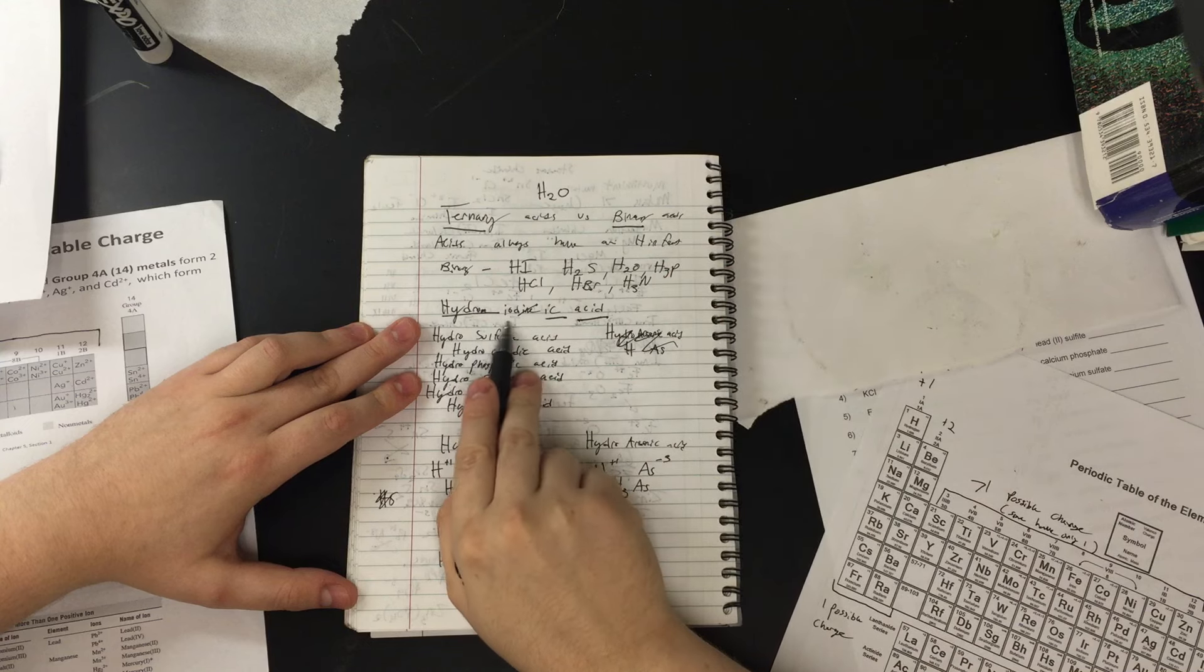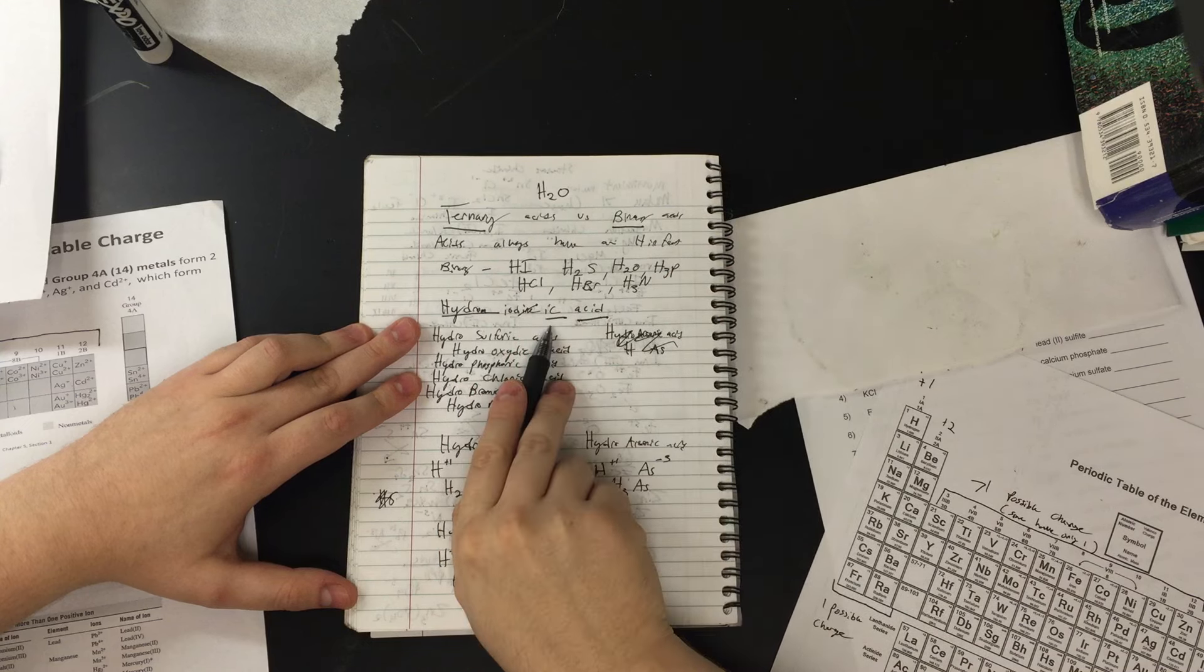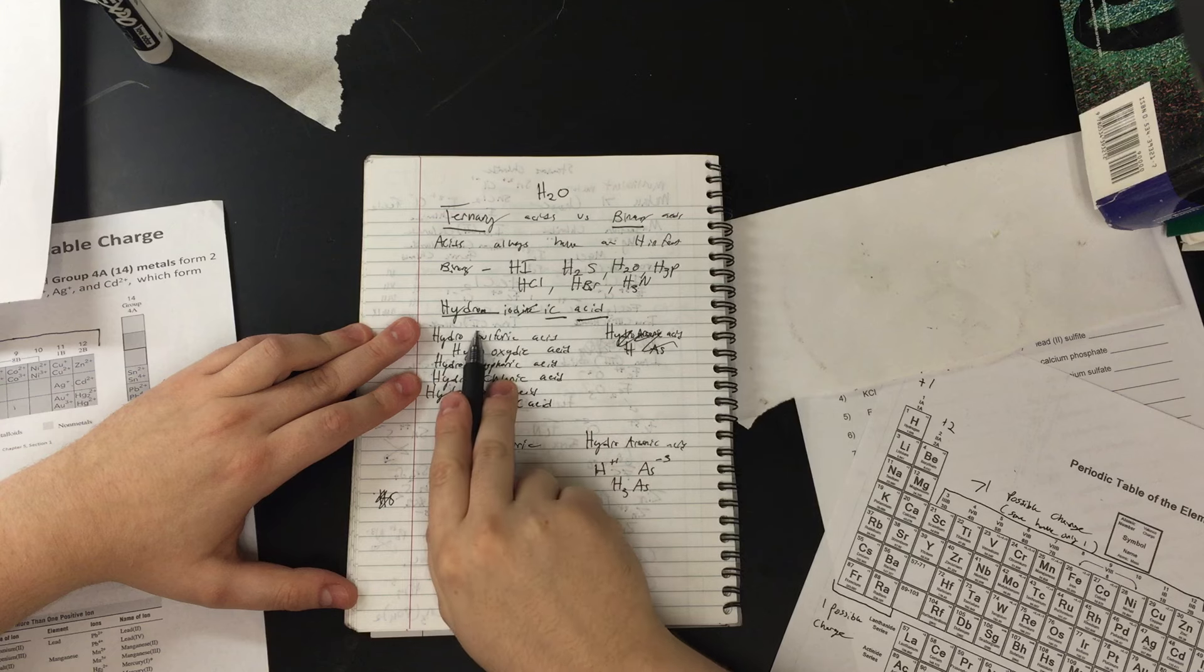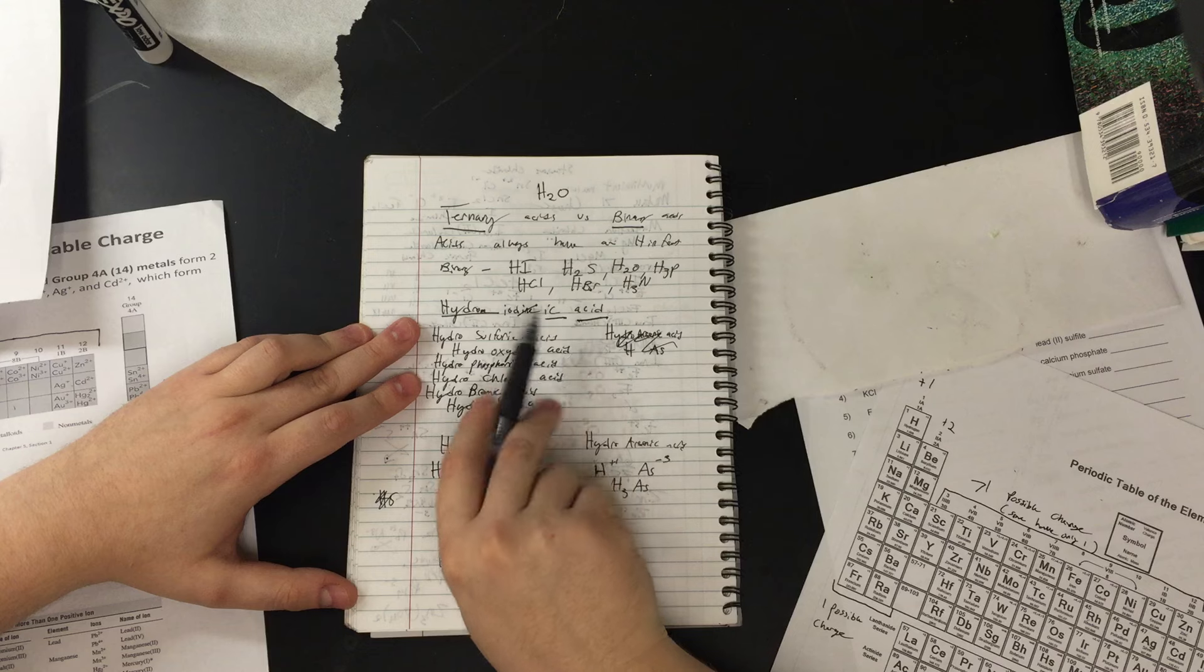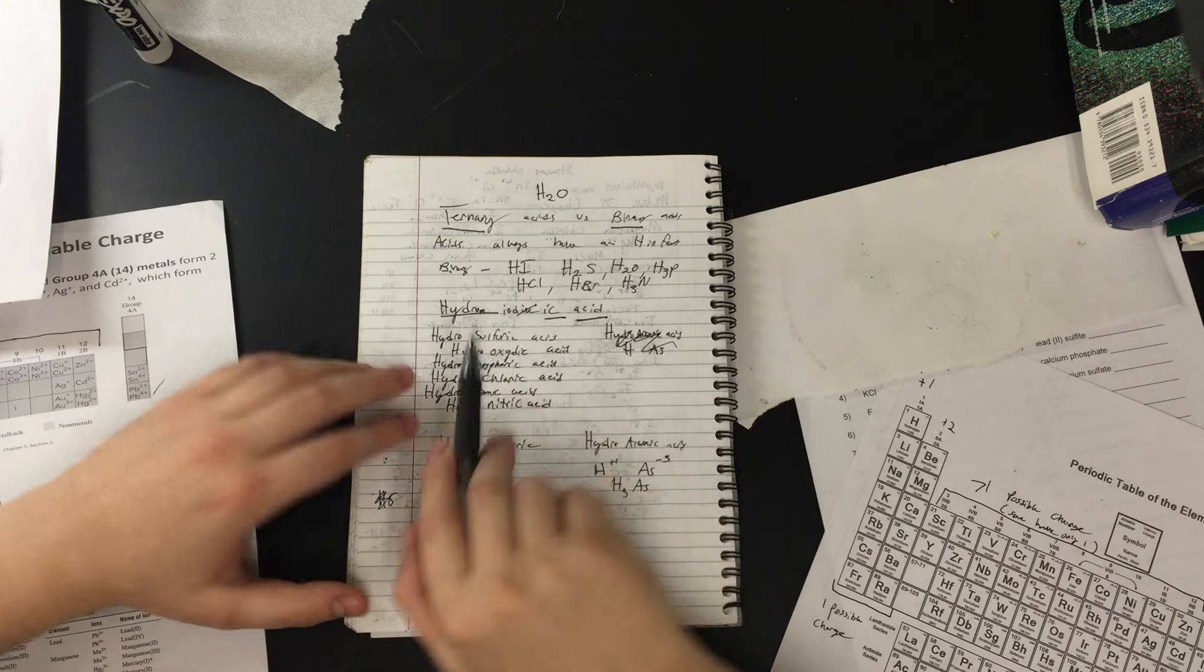So hydro, the element name - we're going to chop off the end, put in ic, acid. Hydro, chop off the end of the element name, replace with ic, acid. So let's look at some examples.